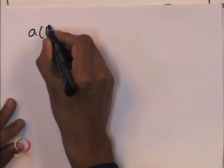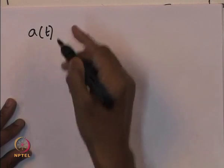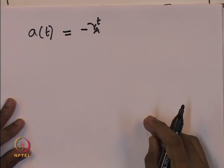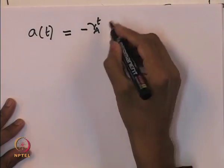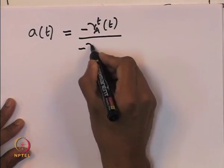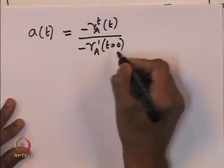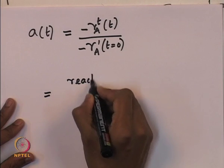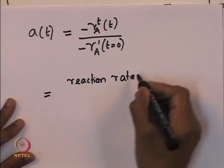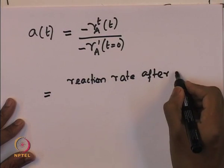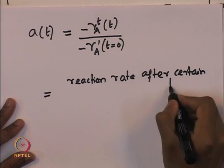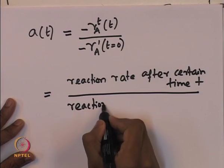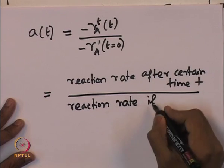When we talk about separable kinetics, the most important quantity that needs to be described is the activity of the catalyst. A(t), the activity of the catalyst, is defined as the reaction rate on the catalyst at a given time, divided by the reaction rate on the same catalyst if it were a fresh catalyst.